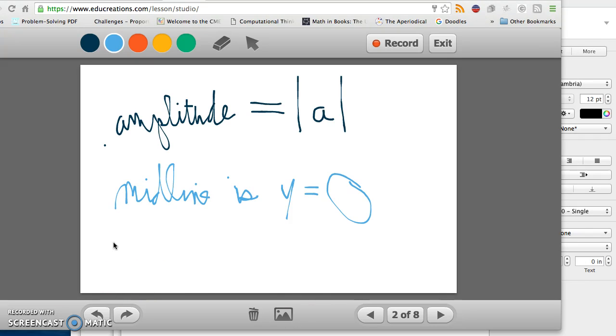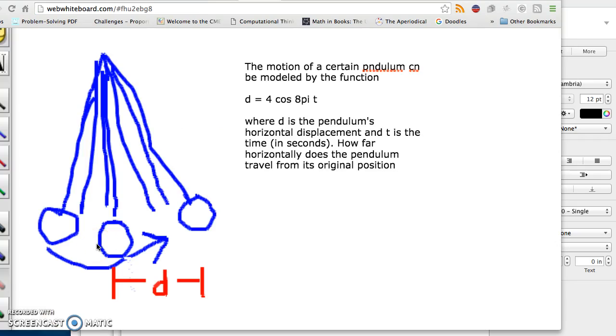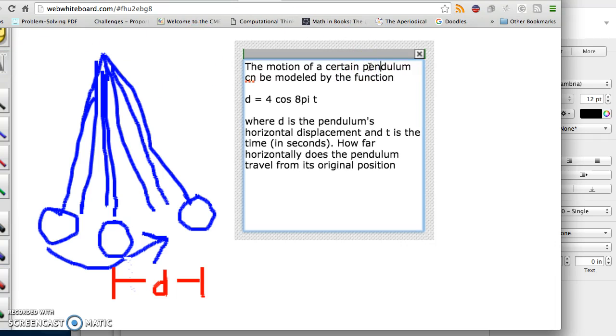Both functions can be used to model a lot of mathematical situations where things repeat themselves over time. And, maybe before this video ends, I can give you one example of that. Okay, so this is page 835, number 16. This is the motion of a certain pendulum. The motion of a certain pendulum can be modeled by the function D equals 4 times the cosine of 8 pi times t.